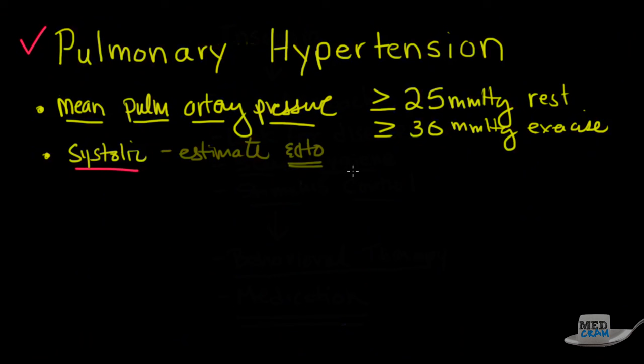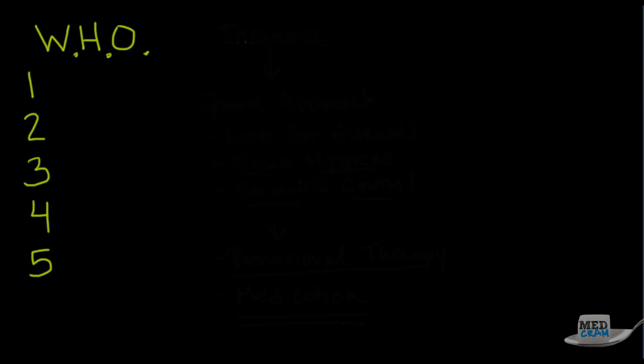There are five major different categories for pulmonary hypertension. These are the five different WHO groups. This is the World Health Organization. They've divided pulmonary hypertension into five different groups.